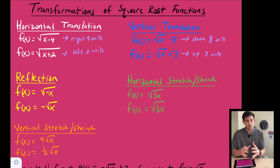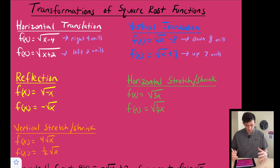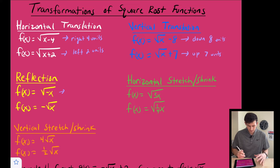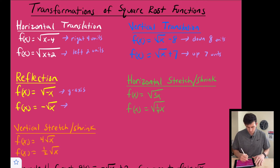If you want to look at how to graph the parent function, check the card in the top right corner. Next, we have reflections. A reflection involves a negative sign — when the negative is inside with x, we reflect over the y-axis, and when the negative is on the outside, we reflect over the x-axis.